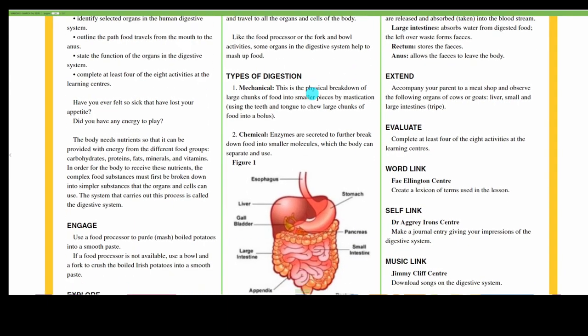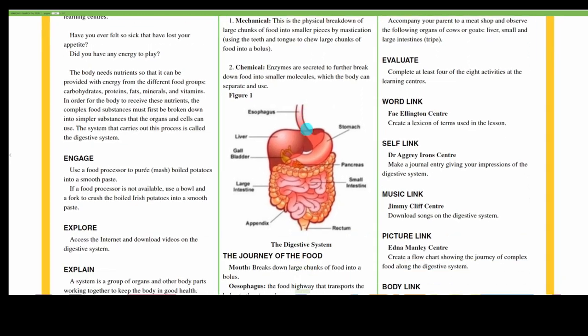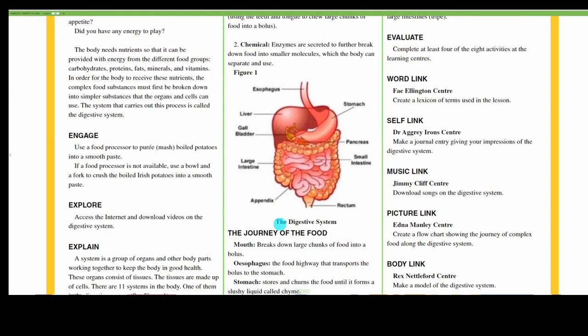Types of digestion: mechanical and chemical. Mechanical digestion is the physical breakdown of large chunks of food into smaller pieces by mastication, that is the use of the teeth and tongue to chew large chunks of food into a bolus. Two, chemical digestion includes enzymes that are secreted to further break down food into smaller molecules which the body can separate and use. And here we have figure one that shows the digestive system.